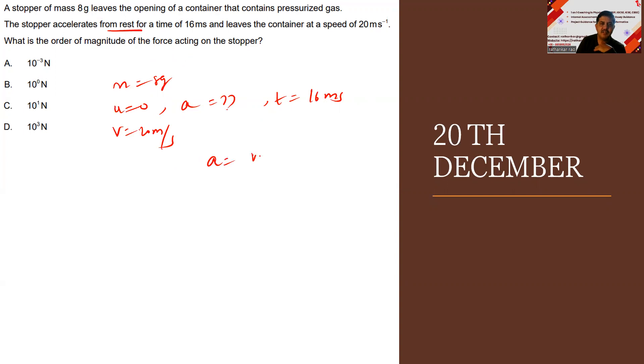Acceleration is equal to v minus u divided by t, which should be 20 minus 0 divided by 16 milliseconds. This should now be equal to 5 by 4 into 10 to the power of plus 3, because milli goes upwards, it becomes plus 3. What will this answer be? 5 by 4 should be equal to 1.25 into 10 cube.